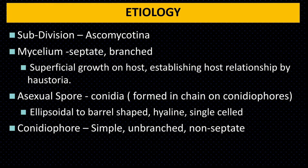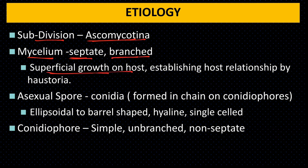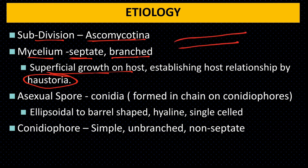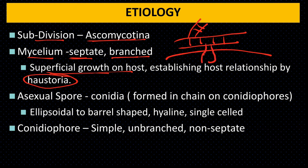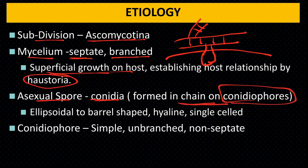Etiology: The fungus belongs to subdivision Ascomycotina. The mycelium is septate, branched and shows superficial growth on the host. It takes nutrition from the host by haustoria. The mycelium does not enter the host cells but forms haustoria to gain nutrition. Asexual spores are conidia, formed in chains on conidiophores. Conidia are barrel-shaped, hyaline and single-celled. Conidiophores are simple, unbranched and non-septate.